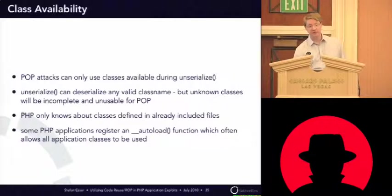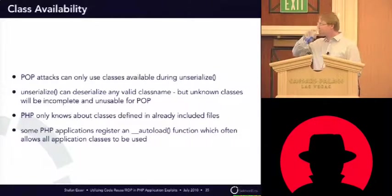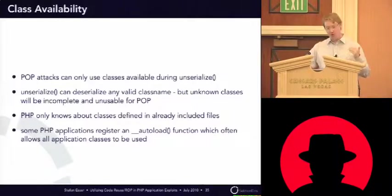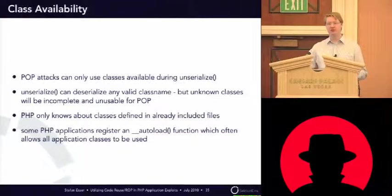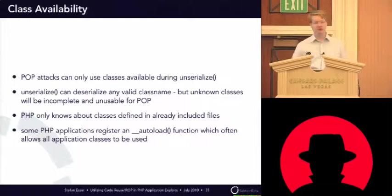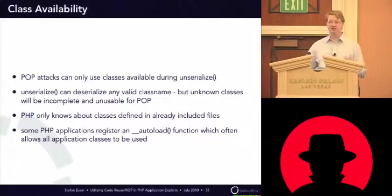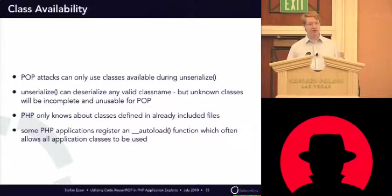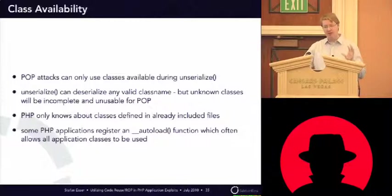When an application unserializes something and creates objects, you can only create the objects that PHP knows about at that moment. So if you unserialize an object called xabcd, PHP will check if this class is available. If it's not available, it will create the so-called incomplete class, which is nothing more than a dummy object with properties — and this is not usable. Basically, you can only use classes for your attack that are already included at the moment of the unserialize.